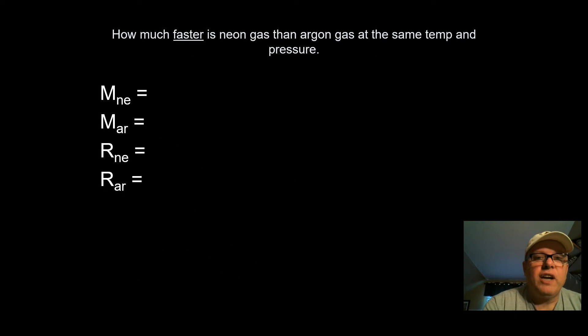Okay. How much faster is neon gas than argon gas at the same temperature and pressure? So we've got neon and we've got argon. And a quick trip to the periodic table says the mass of neon, molecular mass of neon, is going to be 20.2 grams per mole. The molecular mass of argon is 40.0 grams per mole. Now, quick comprehension check here. The lighter gas always moves faster. Always, always, always. So neon always has to move faster than argon because neon is lighter than argon.